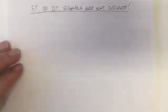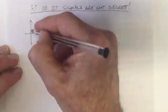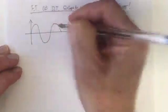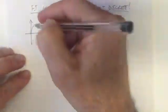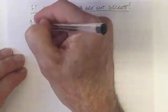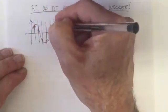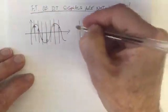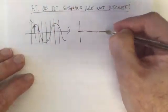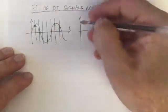Let's explore why that is. Consider a continuous time signal — let's just consider a sine wave. We're going to sample that sine wave at particular times by multiplying by delta functions. From that, we can create a discrete time signal by taking the heights of those delta functions one after the other and plotting them as a discrete time signal with integer indices.